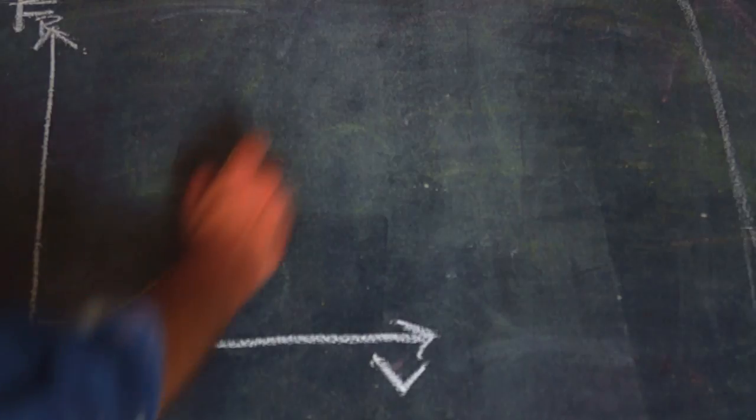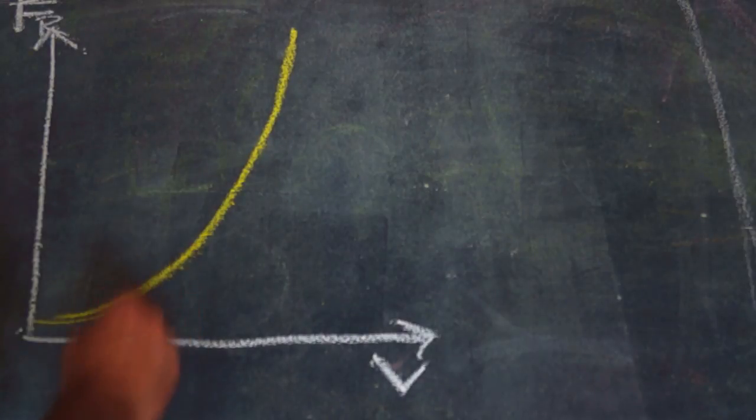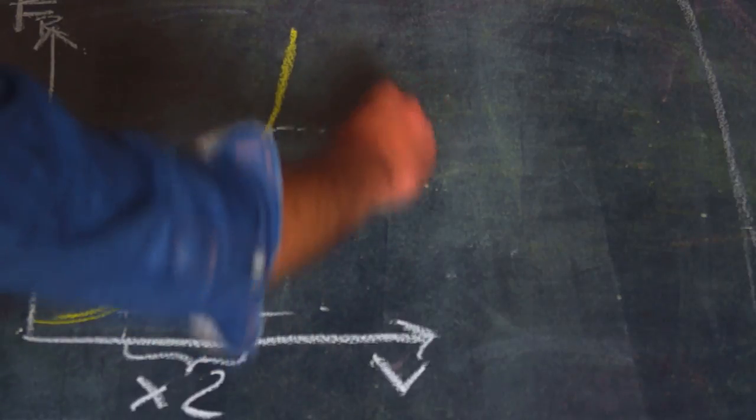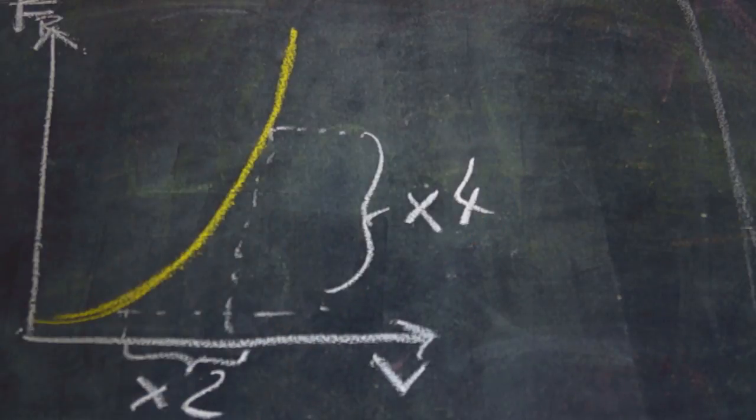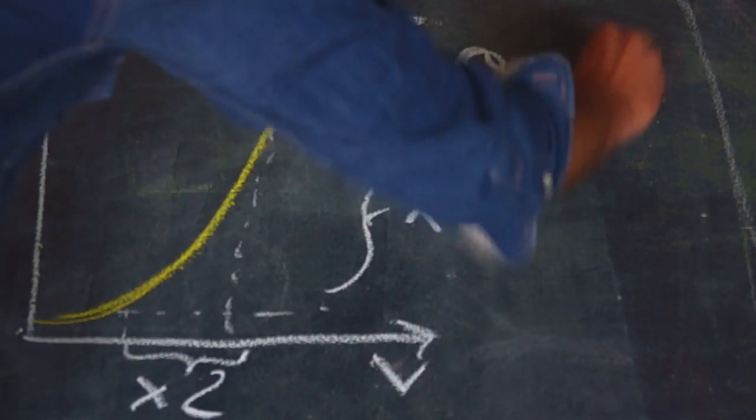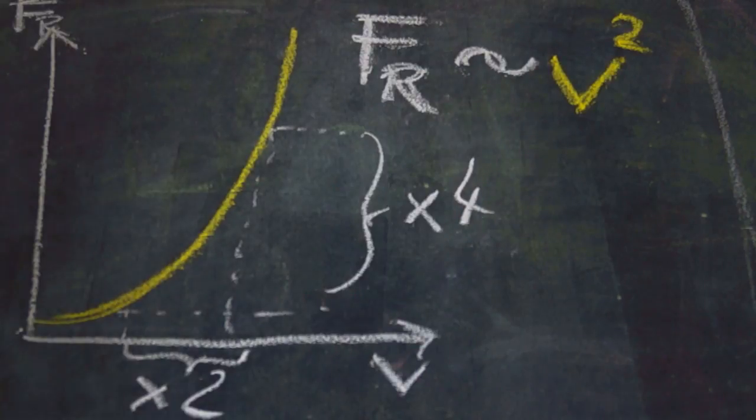But what about speed? A potato flying twice as fast as another potato faces four times the air resistance. This means that the air resistance grows proportionally to the square of the velocity. Thus we can calculate the air resistance if we know the values of the attack surface, the form factor and the velocity.